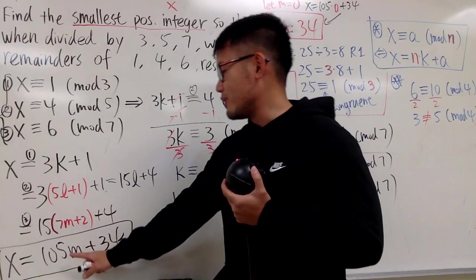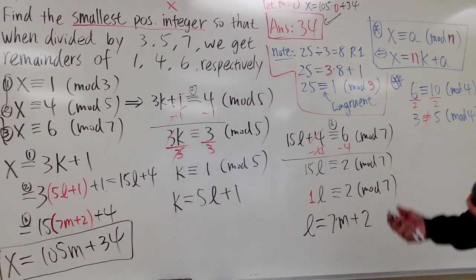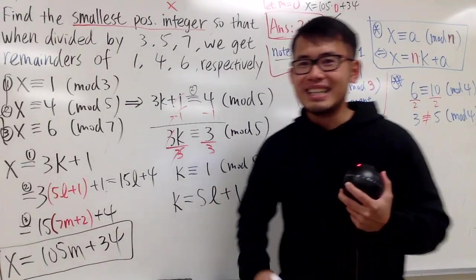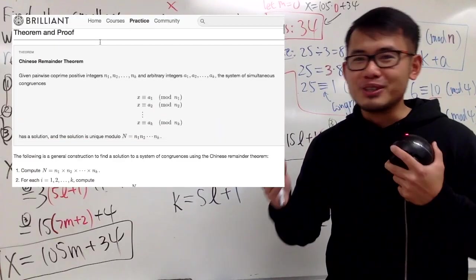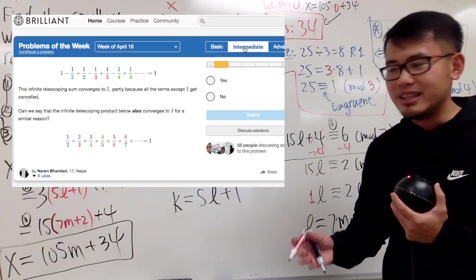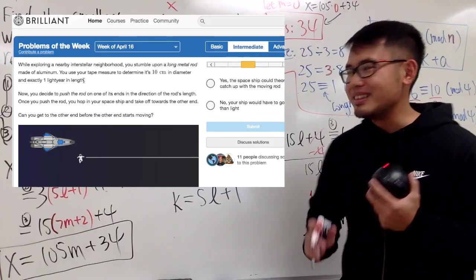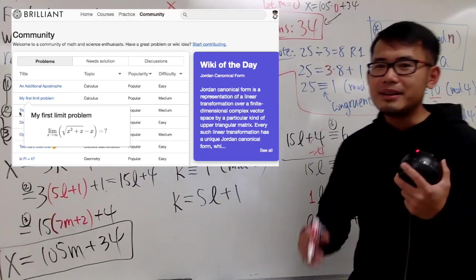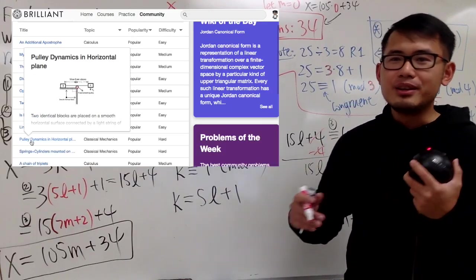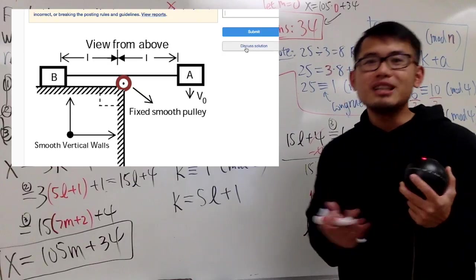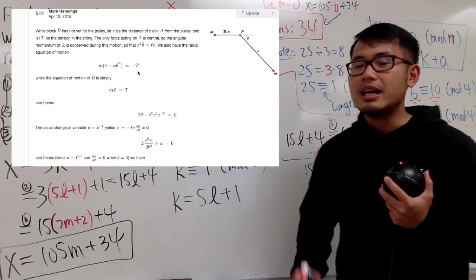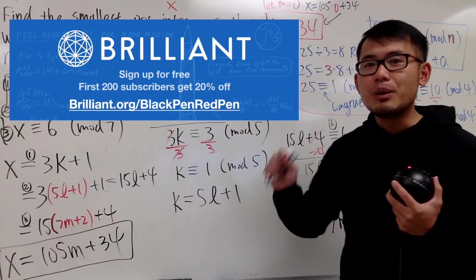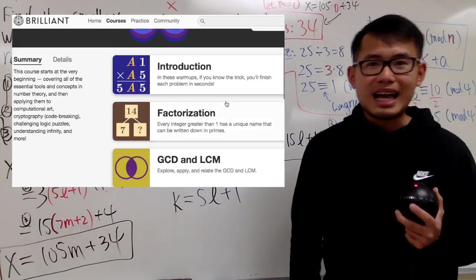This is an example of how we solve a system of congruences — and this is number theory, which is really cool. I don't just like calculus; I like a lot of math. If you like math too, check out Brilliant at brilliant.org/blackpenredpen. They have great problems of the week to try and think about, you can track your progress, and join their community to discuss solutions with people from around the world. Use my link for 20% off the annual premium subscription.